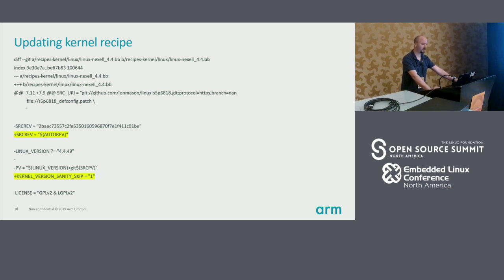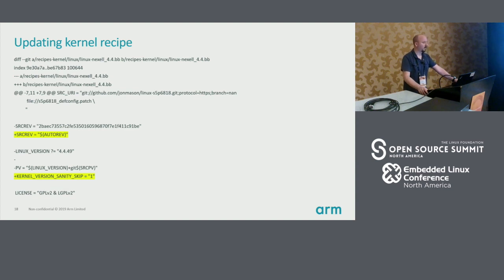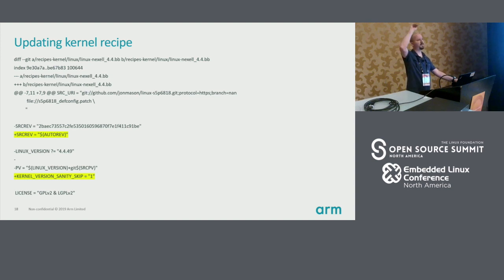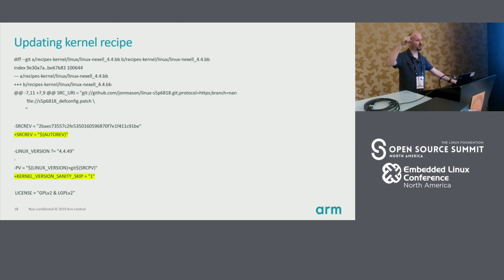So the kernel recipe that I showed a second ago — the source rev, if you don't know, is essentially saying give me the SHA of the commit that you want to check out. And autorev says give me the topmost. So this way, instead of saying I want this specific one, you say just give me the top. And that way, every time you rebuild it, you'll be building the latest greatest. So if you update your Git tree, you'll have the latest greatest every single time.